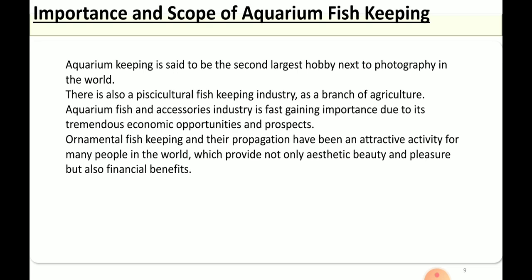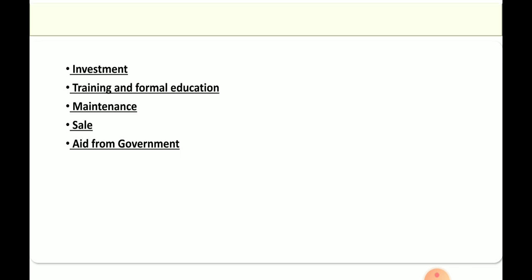In what way can you get scope? There are different scopes like investment, training for formal education, maintenance and sales, and also aid from the government. For investment, it requires very small initial investment, perhaps in thousands of rupees. But later money automatically gets generated as sales of fishes and aquarium accessories begin.